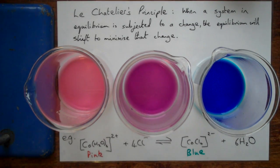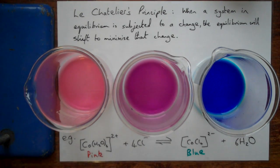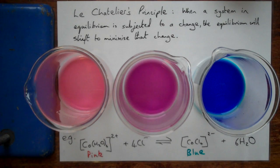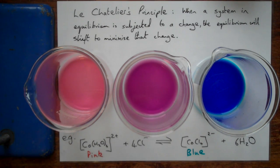In this video we're going to look at an important part of chemistry called Le Châtelier's Principle. This is all about reversible reactions when they're at a state we call equilibrium — when they're balanced. Le Châtelier said: when a system, that's any group of chemicals together in a test tube or a flask, when a system in equilibrium is subjected to a change, the equilibrium will shift to minimise that change. Hopefully the experiments I'm going to show you now will illustrate that principle.